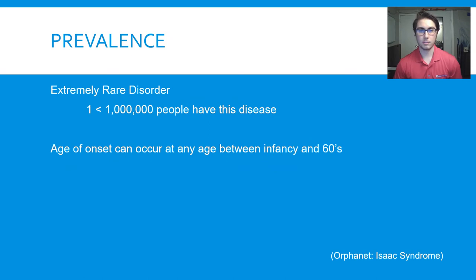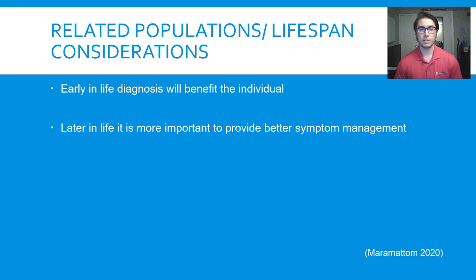The prevalence of Isaac's syndrome is extremely rare — less than 1 in 1 million people have this condition. The age of onset can occur between infancy and 60. This condition can occur in all geographical locations and does not affect any specific place or people. Early-in-life diagnosis will benefit the individual by creating better management of symptoms, allowing the patient to live a more normal lifestyle without fatigue or injury. It is important to provide better symptom management in older adults to prevent injury through falls and to allow for daily life activities.